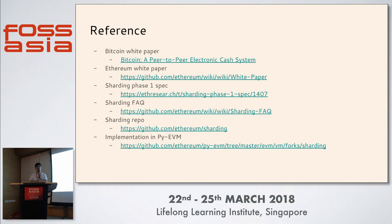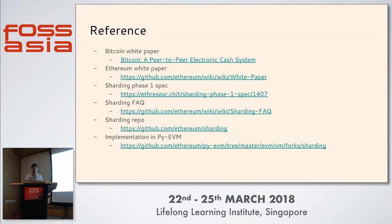Question: will sharding increase the volume of transactions processed, and will it also increase latency — e.g., going from 10 seconds to 20-30 seconds before a transaction appears on the final blockchain? Answer: In sharding phase one, one period has one collation, and the current period is five blocks in the main chain. With a block time of about 15 seconds, that's 75 seconds. So in these settings the latency will increase, but there is still research on reducing the number of blocks per period, possibly down to one, which would bring latency back to roughly the original Ethereum level.